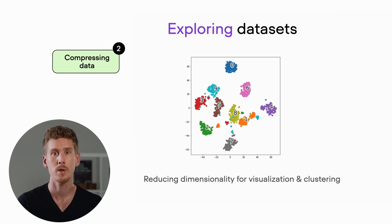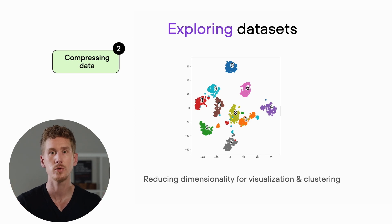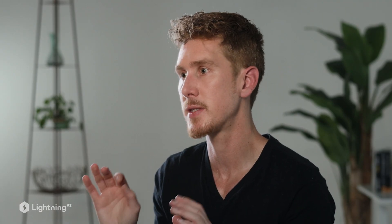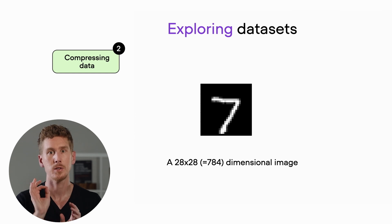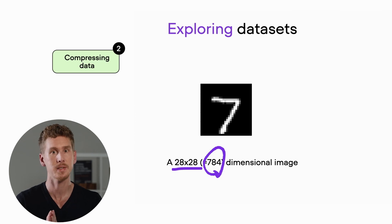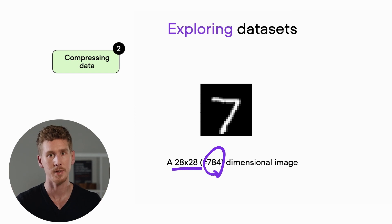However, data compression is not only useful for saving large datasets, it's also very useful for exploring large datasets. Here's an example where we have a high-dimensional dataset that we projected into two dimensions. To explain this with an example, imagine we have a dataset of handwritten digits. Each handwritten digit is an image — a 28 by 28 image, so 784 pixels in total — and this is something we can't easily visualize in a plot anymore.